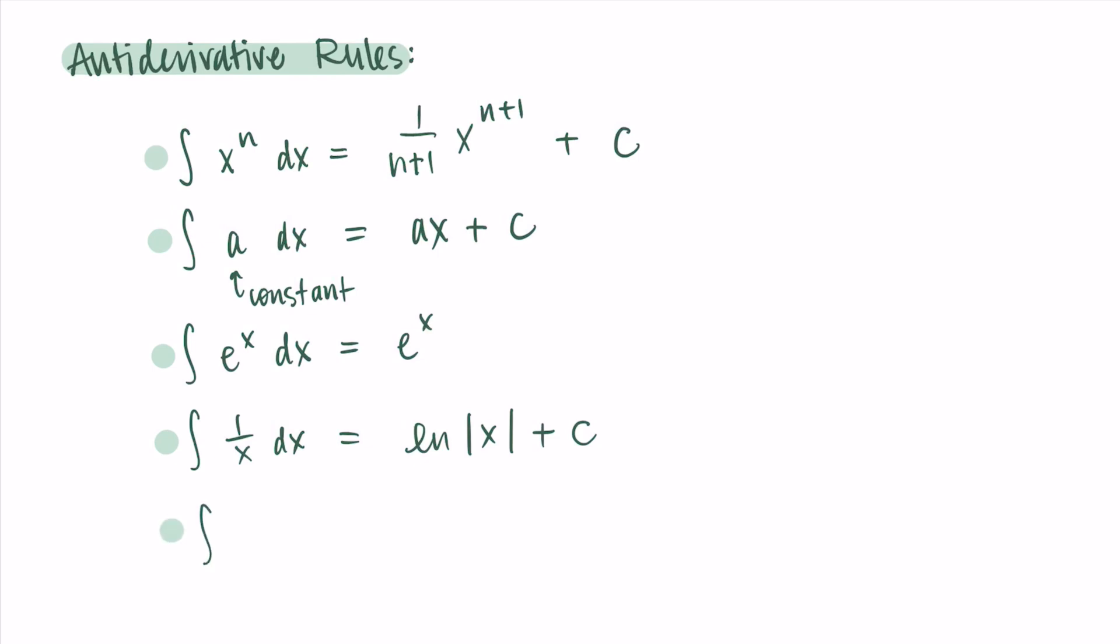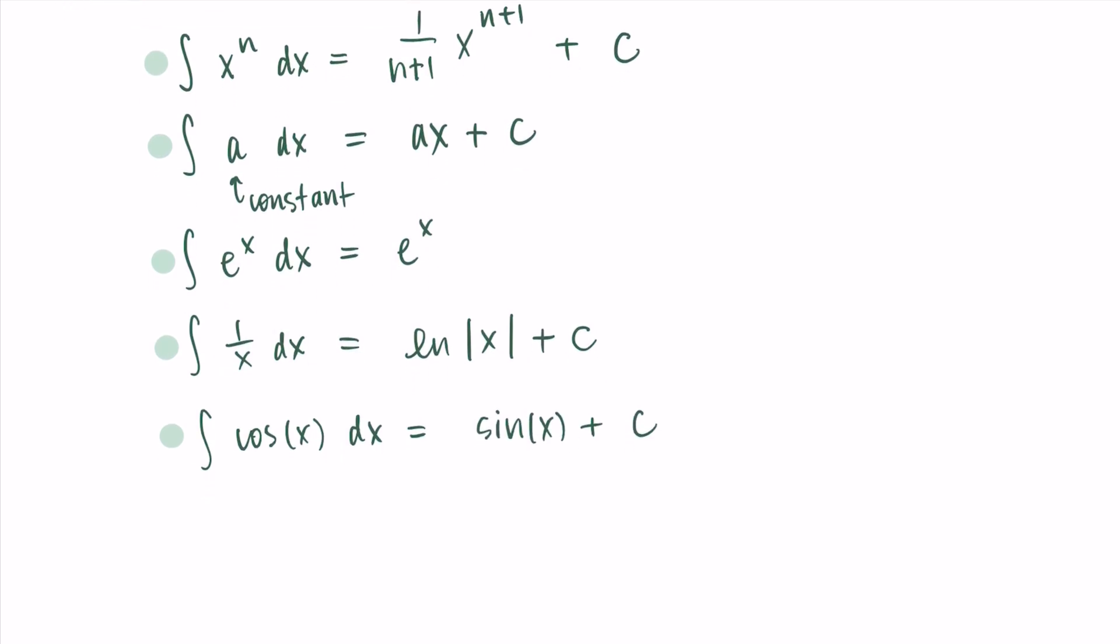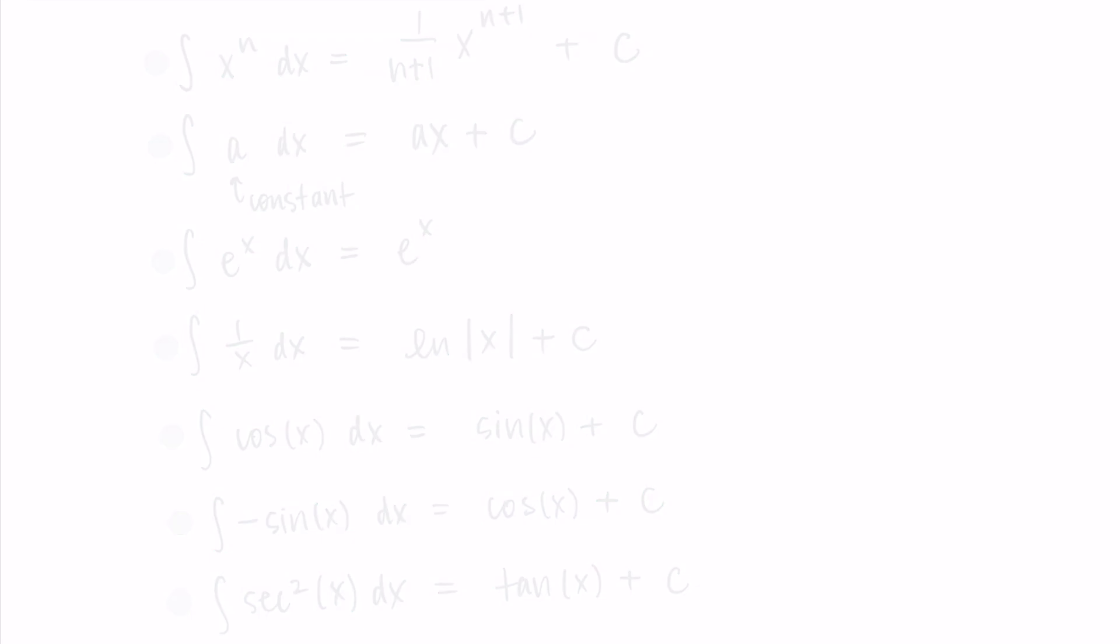Then we can do some trig functions. So the integral of cosine is just sine plus c. The integral of negative sine is cosine plus c. That's because the derivative of cosine is negative sine. Then the integral of secant squared is tangent. So these are just rules for our sine, cosine, and tangent derivatives, but now written as antiderivatives. Okay, so that's just some of our more simple antiderivative rules. We're going to learn a lot of ways to solve integral problems, but these are just our basic ones that come from our basic rules for derivatives.